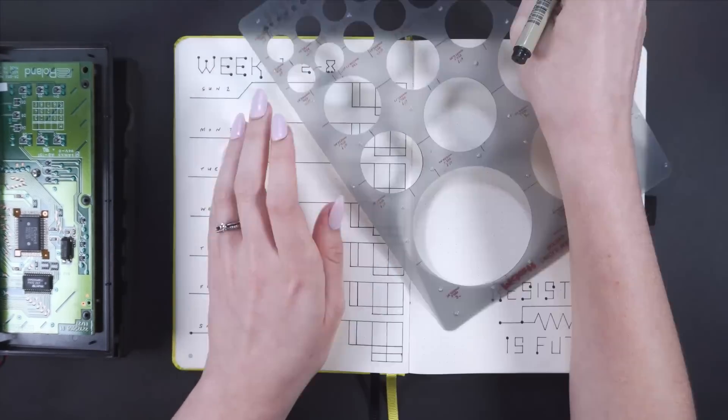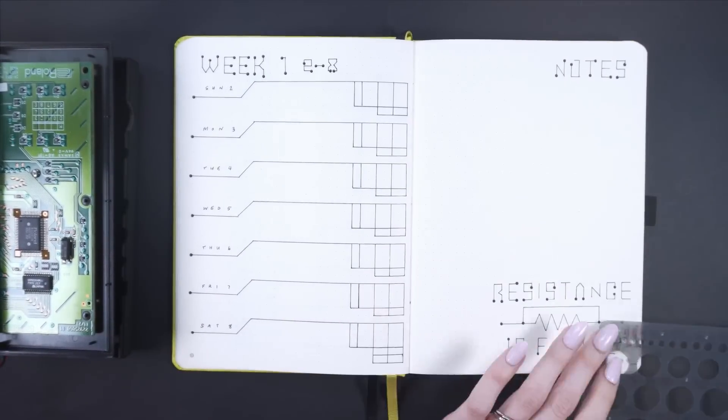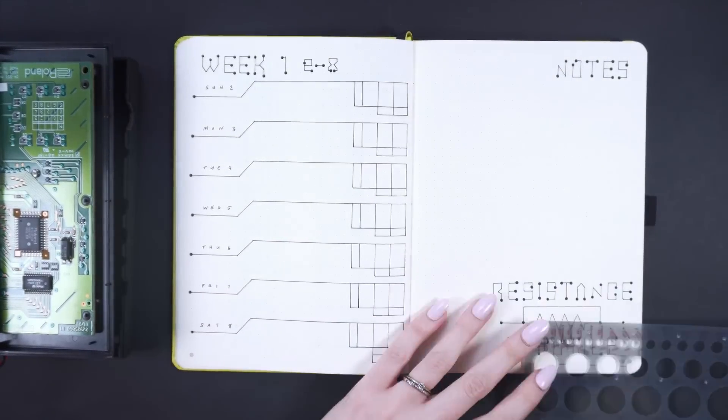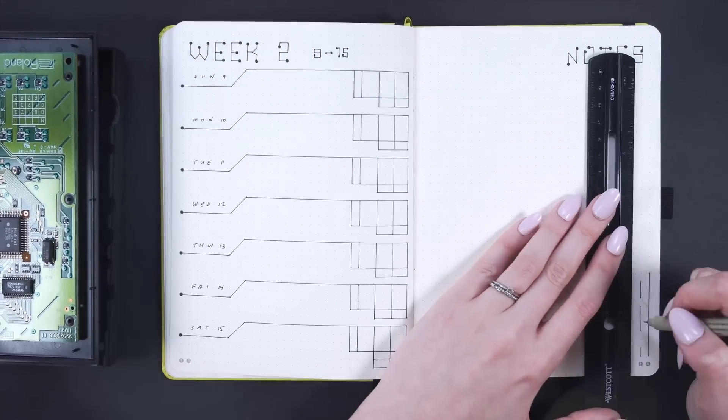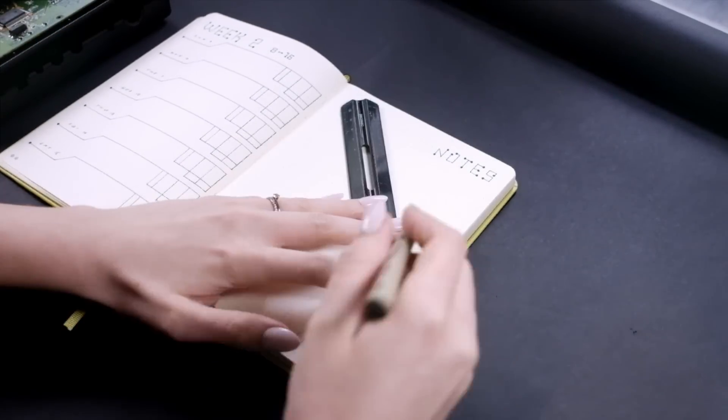We're both pretty nerdy and 'Resistance is futile' is a Star Trek quote from one of the big bad villains of Star Trek, the Borg. And the symbol in this drawing here is the symbol for resistance, so it's kind of a funny double meaning nerdy on two levels kind of joke.